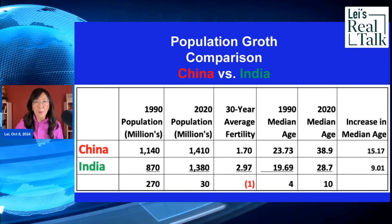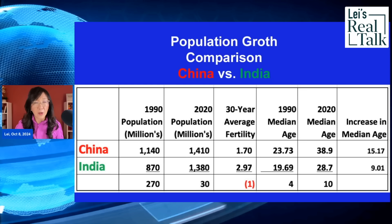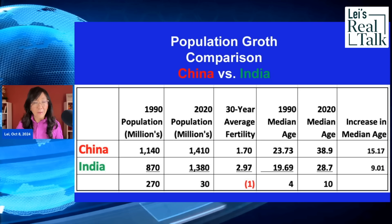These are all official numbers. In 1990, China's population exceeded India's by about 270 million. Thirty years later, China's population is still higher than India's by about 30 million. However, if you look at the fertility rate, India's average fertility rate over the 30 years is so much higher than China's — almost three. That means every woman on average had three children in India. In China, the average is 1.7.